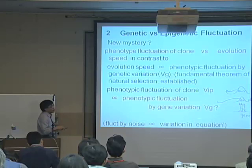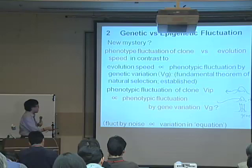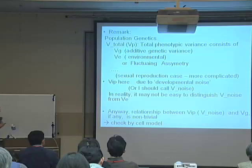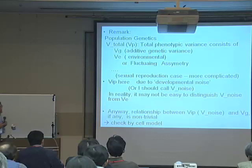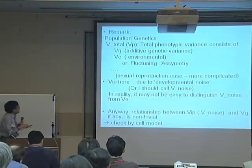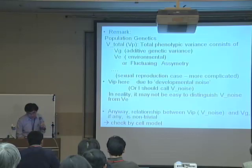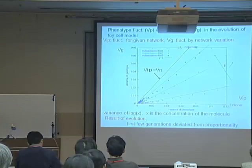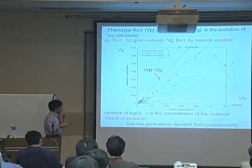I use VIP to denote the phenotypic variance of isogenic organisms with the same gene. In population genetics, there is VE — environmental variance — and VG — variance due to genetic change. In some sense, VIP can be included in VE, but here VIP is mostly due to noise in the developmental process. So the question is whether VIP and VG are proportional. VIP of isogenic bacteria does not depend much on mutation rate, but VG — due to genetic change — if the mutation rate is larger, genetic variance is large. So VG increases with mutation rate.